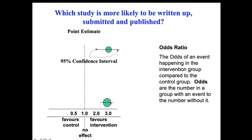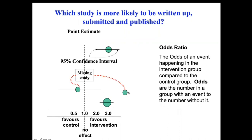You can see that the larger study's effect size is possibly the same in this particular example, but because of its size the confidence interval is smaller. There are possibly two other studies where the point estimate in one case is less than one, and in the other case is much greater than three — so this study shows a much greater effect, while this one shows no effect.